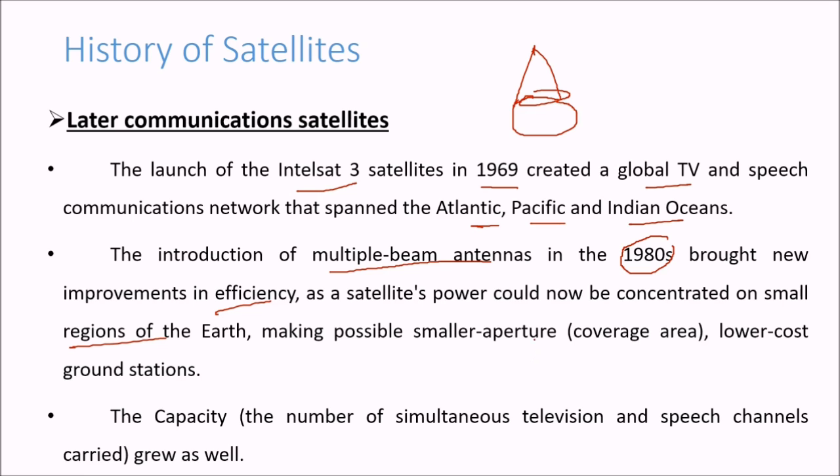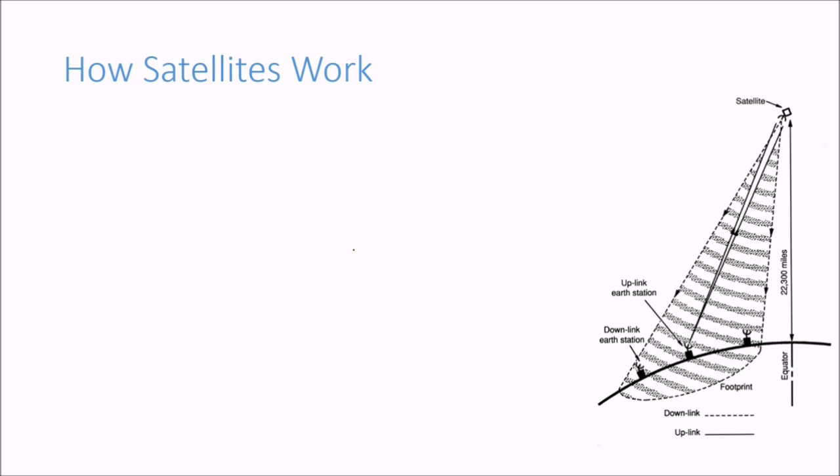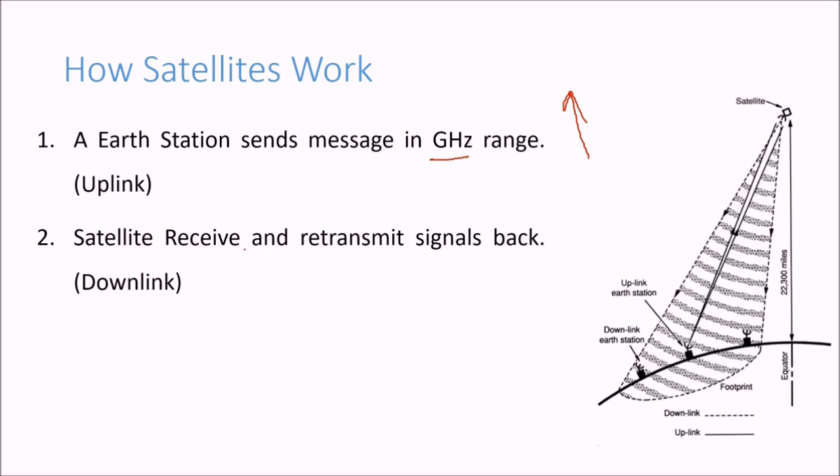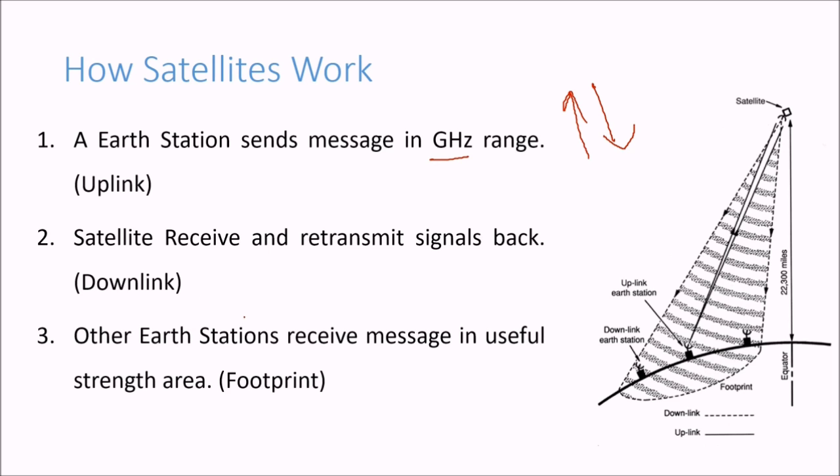So how exactly do satellites work? The earth station sends messages in the gigahertz range, which we call uplink. The satellite receives and retransmits the signal back, which is called downlink. Other earth stations receive messages in useful strength areas, which is called the footprint.